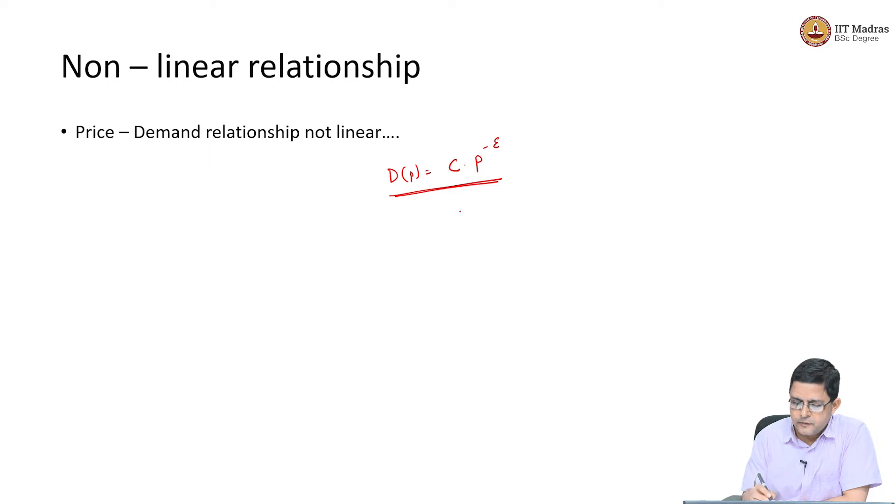Where C was a constant - if you recall, C is actually a constant which reflects demand at price equal to 1. This is the demand at price equal to 1, and epsilon was the constant elasticity, and we had defined elasticity in the last session.